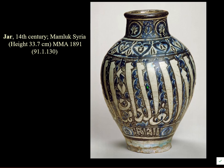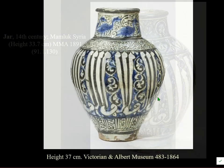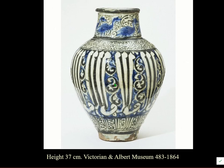Looking at underglaze painted wares after 1250, early in the Mamluk period there are many similarities with late Ayyubid pottery in the motifs, and also a lot of calligraphy — they did love their calligraphy, though it doesn't necessarily mean anything and is often decorative nonsense. Standard stone paste body with underglaze painted cobalt blue and chromium black with an alkaline glaze.